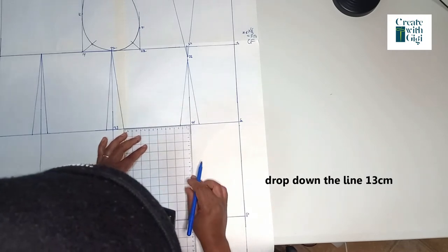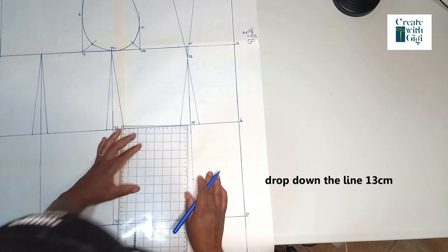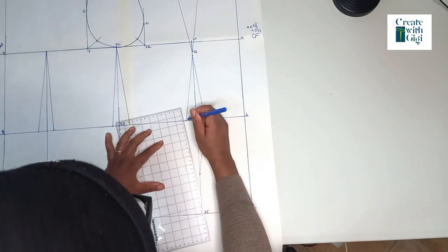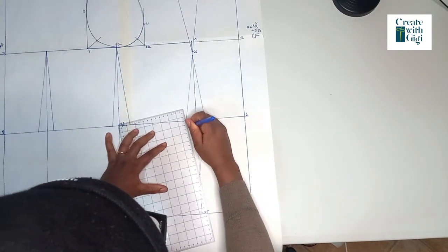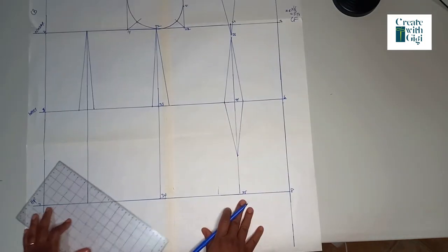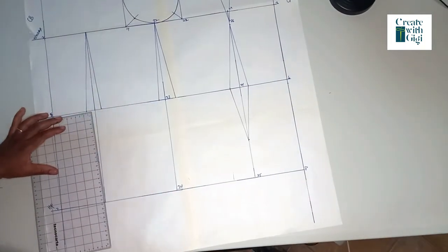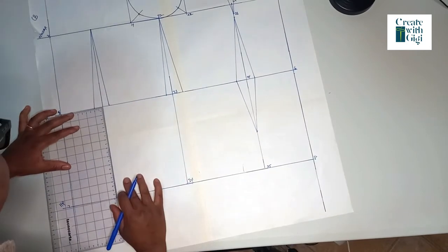If you're going to continue with us, let's go on. Now you're going to drop down this line 13 centimeters and then draw the dart legs to meet that point. You do the same for the back - extend to that point by 13 centimeters.